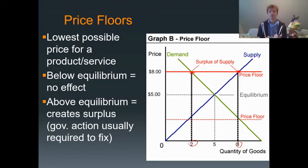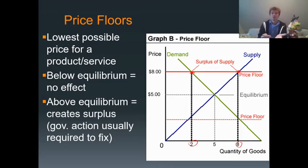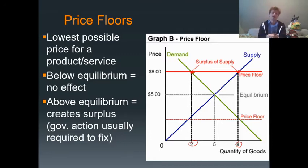What do we do with that surplus? Somebody has to buy it, otherwise it's not beneficial for the businesses being protected, so the government typically has to step in. A good example is during the Great Depression — to help farmers, the government would buy up excess corn to prop up the price. They put a price floor on it, bought the excess corn, and then destroyed it. Destroying it sounds wasteful, but if they didn't, they'd have to give it away or sell it themselves, which would flood the market again and cause the same problem.